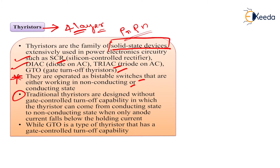Traditional thyristors are designed without gate-controlled turn-off capability. This means the thyristor can come from the conducting state to the non-conducting state only when the anode current falls below the holding current. These relate to the VI characteristics of thyristors. However, the GTO is the only type in the thyristor family that has gate-controlled turn-off capability. Thyristors are basically divided into two parts: unidirectional and bidirectional.